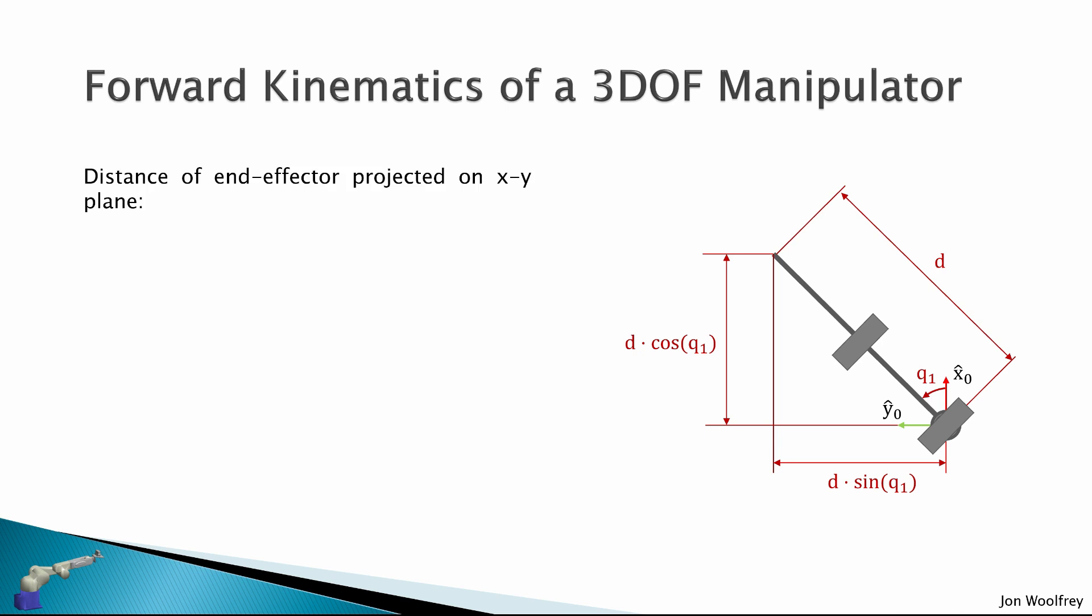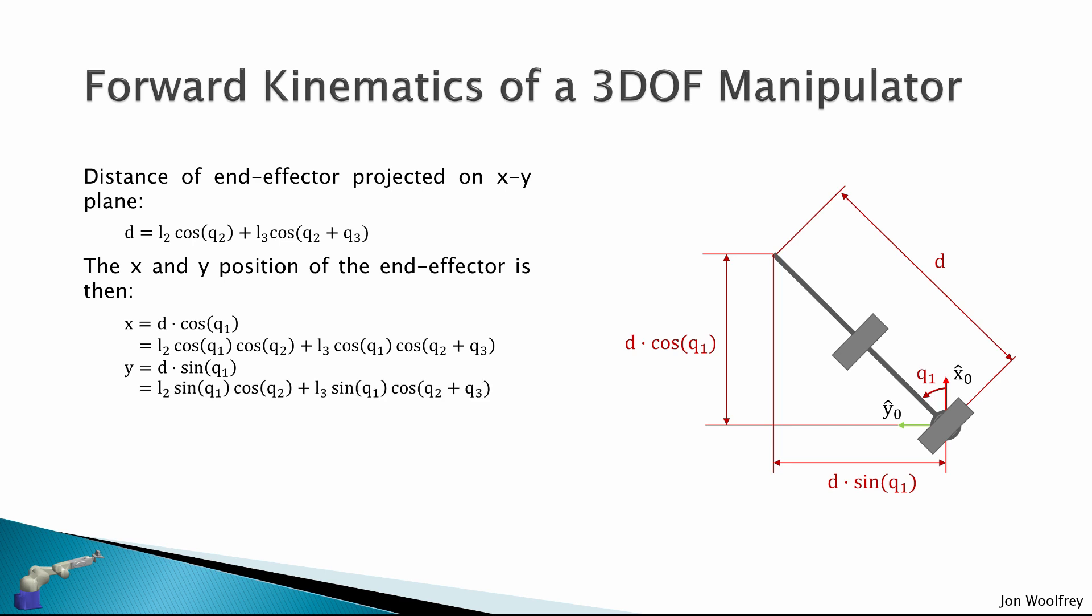So now the distance of the end effector projected on the XY plane, as we previously defined as D, was L2 cos Q2 plus L3 cos(Q2 plus Q3). So here we're looking at the robot from the top view, and that's the distance D. And so the X and Y position of the end effector is then D cos Q1 here for X. And this is L2 cos Q1 cos Q2 plus L3 cos Q1 cos(Q2 plus Q3). And similarly, Y is equal to D sin Q1. And it is given by this solution here. So we just multiply again D by sin Q1.